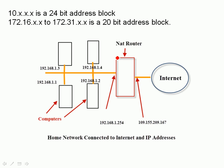This NAT router has two IP addresses because it's on two networks. On the internal network it has an address of 192.168.1.254, and it's also connected to the internet — an external network — and this is the IP address it's known by on that external network.